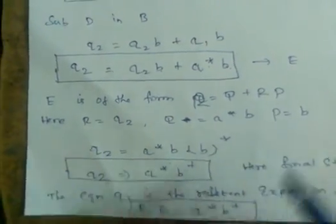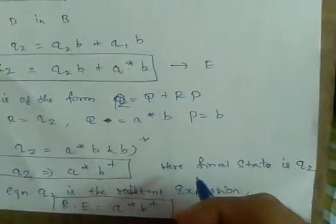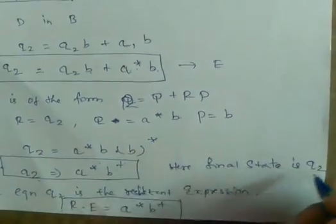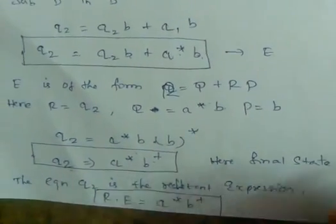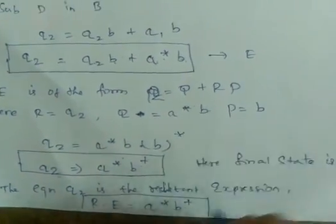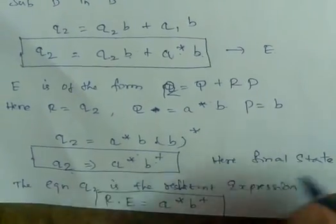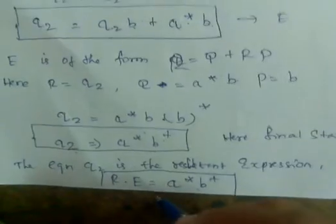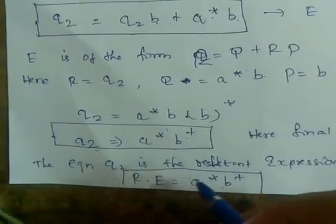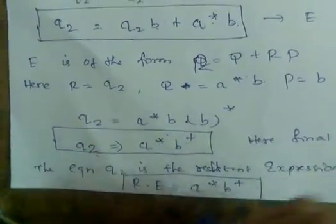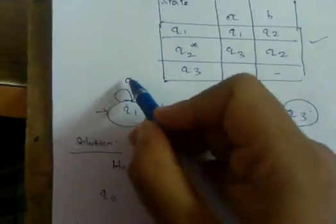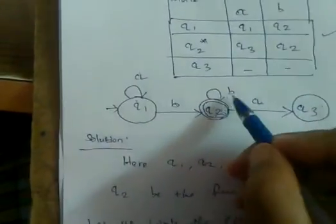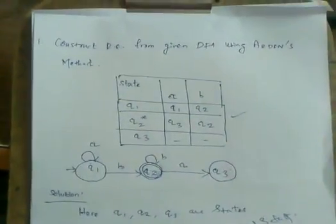Since q2 is the final state in the automata, the resultant regular expression is given by q2's equation. Therefore, the regular expression is a*b+. This is the regular expression derived from the given DFA using Arden's method.